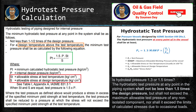For ASME Section 8 Division 1, the hydrostatic test pressure at every point of the vessel shall be at least: Pt = 1.3 × MAWP × St / Sd, where Pt is the test pressure, MAWP is the maximum allowable working pressure of the vessel, St is the allowable stress at test temperature (usually 100°F), and Sd is the allowable stress at design temperature. The ratio St / Sd is called the stress ratio.